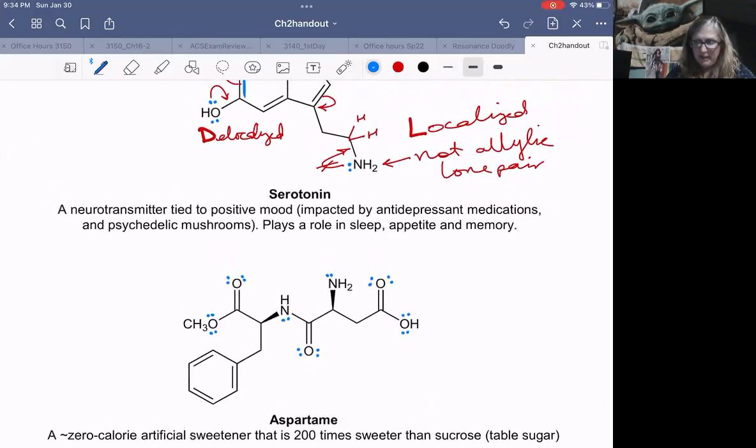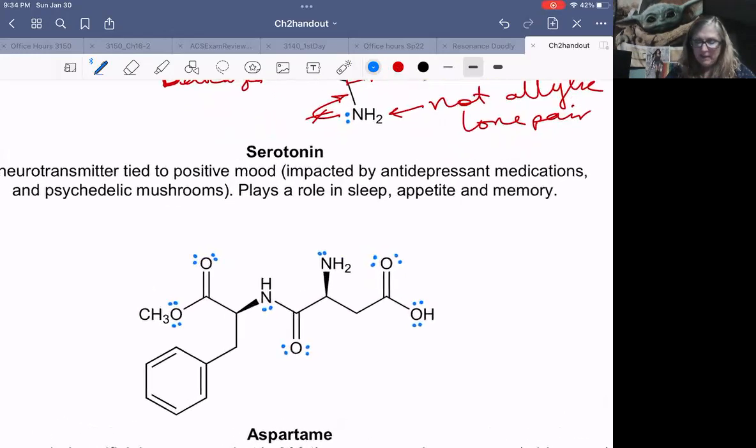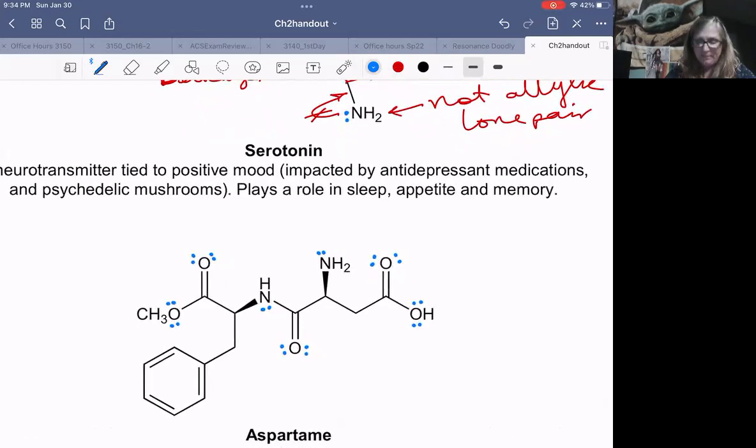Does this have any of these lone pairs involved in resonance? When we have a lone pair that is next to a pi bond, it can have resonance. This lone pair can have resonance delocalization. This one is delocalized, but the lone pairs that are up here on this oxygen, these are not next to a pi bond. They're on the pi bond. They cannot have that same allylic lone pair resonance. So those lone pairs are localized.